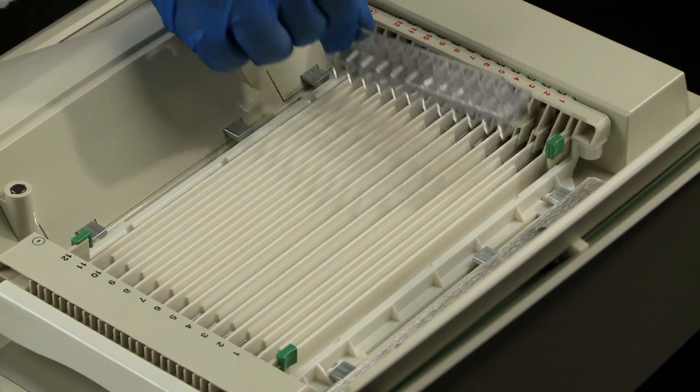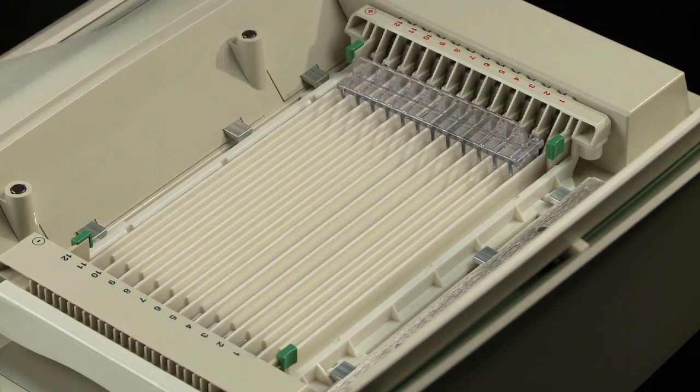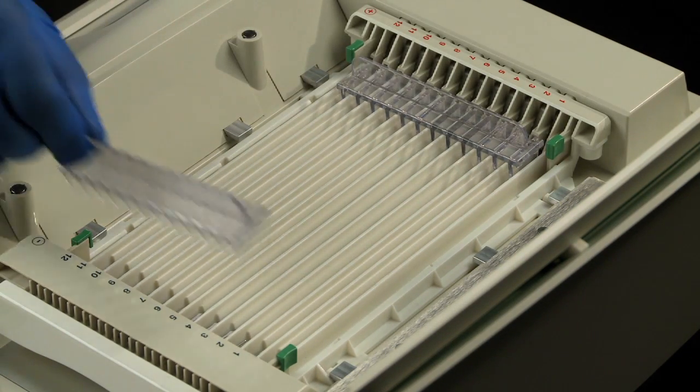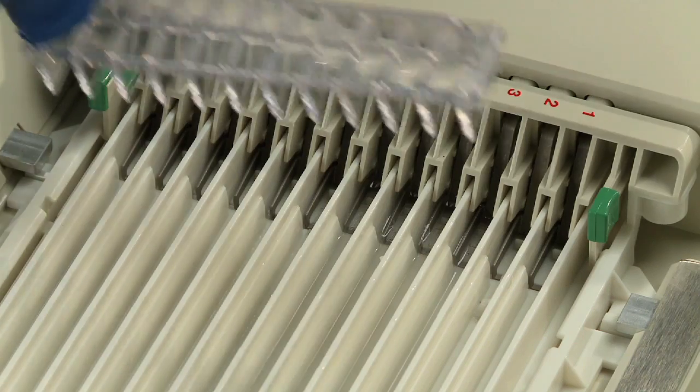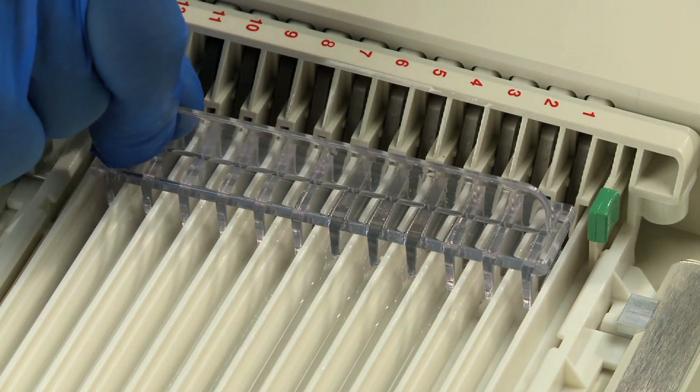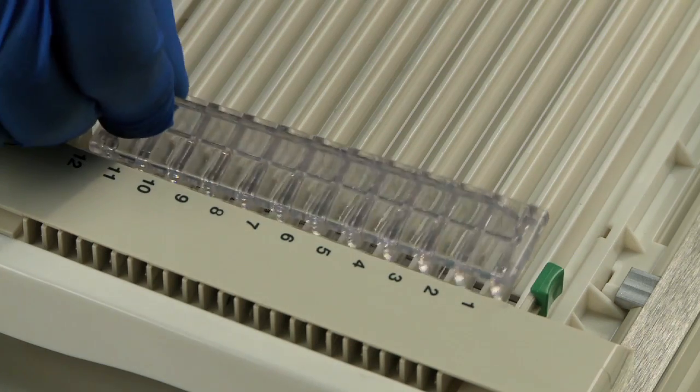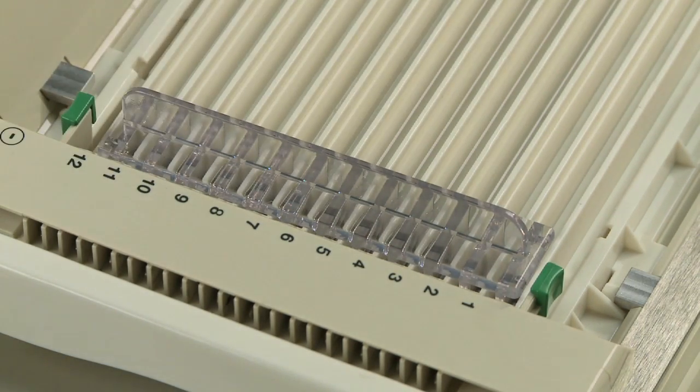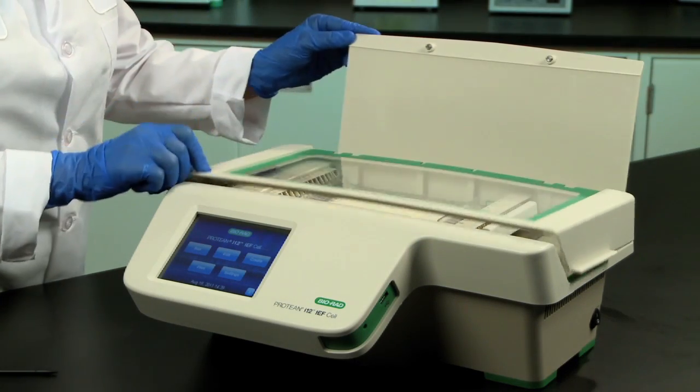Put the IPG strip retainers into place. Without IPG retainers in place, gases formed during electrolysis may lift IPG strips off the electrodes, interrupting electrical contact. Close the lid and you are now ready to program the cell.